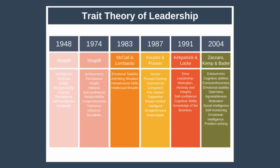Many years later in 1974, Stogdill published another list of leadership traits, compiled by analyzing research on trait theory that took place in the intervening years since his last list. The critical difference between the first and second survey is that he moved away from implying that situational factors were the most important, to suggesting that both situational and trait factors were important.